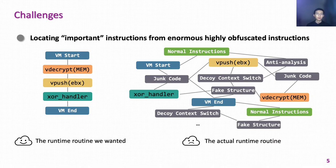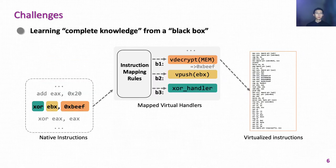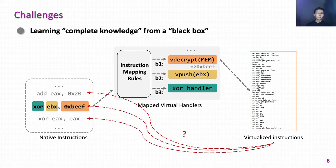It will greatly increase the difficulty for analysts to identify important instructions. Another challenge is how to learn complete knowledge from a black box. Since the commercial obfuscator's internal mechanism is a black box, given a piece of virtualized instructions, reverse engineers have to spend significant effort understanding the original semantics. But if the analysts have the mapping rules, they can easily recover the original instructions.